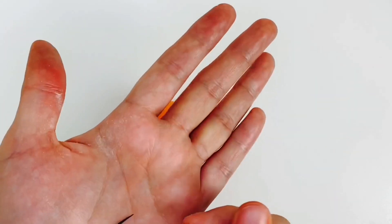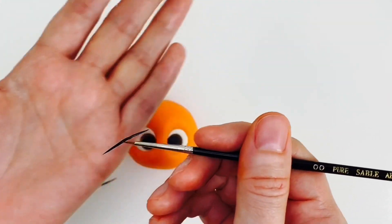Roll a very fine sausage black modeling paste and glue around the top and outer edge of the eye.